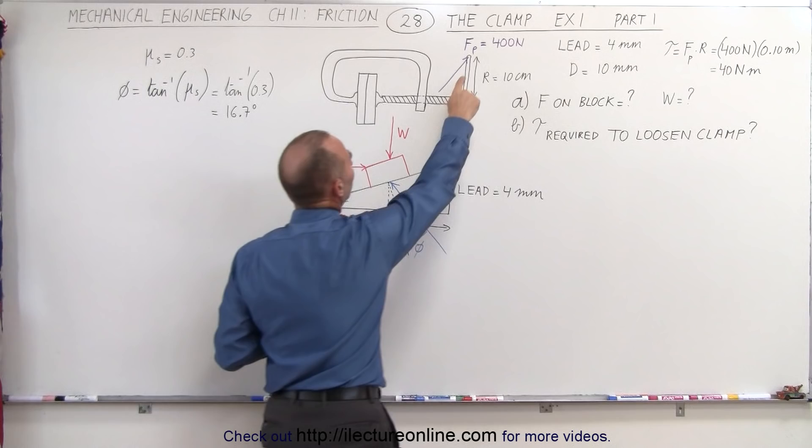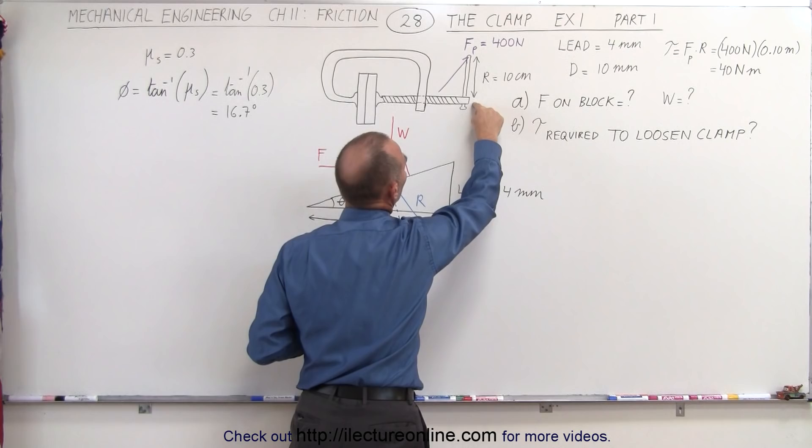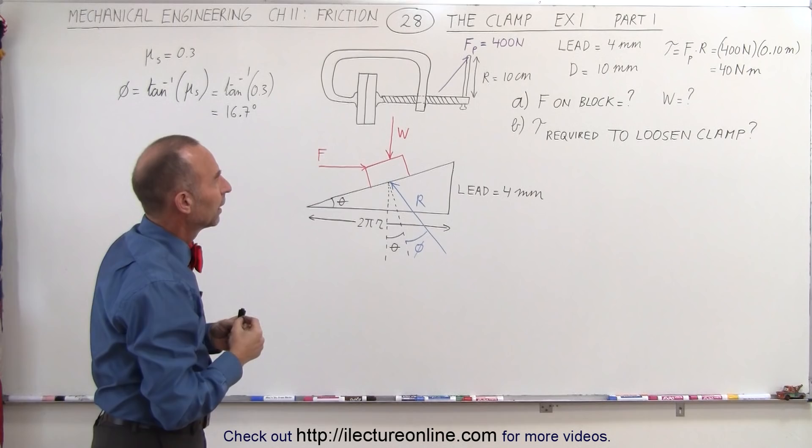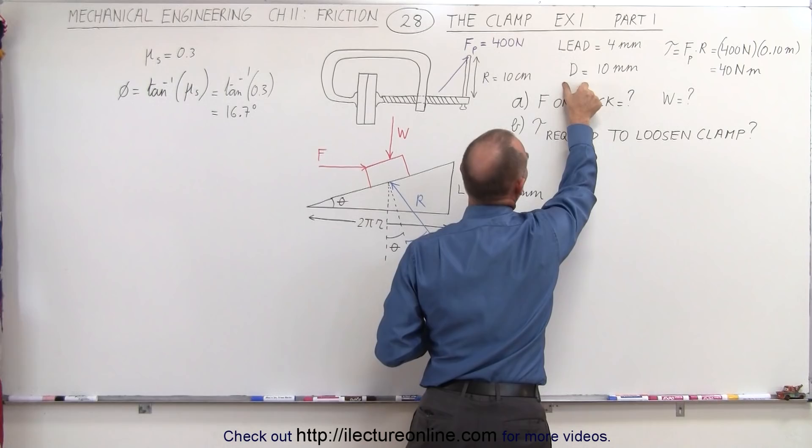We're applying a force to the edge of the handle which is 10 centimeters away from the center of the screw, and we're applying a force of 400 newtons trying to tighten that screw. The lead of the screw threading is 4 millimeters and the diameter of the screw is 10 millimeters.